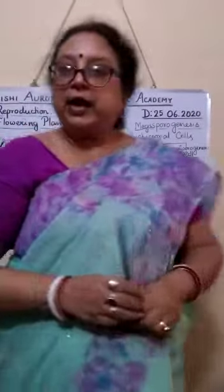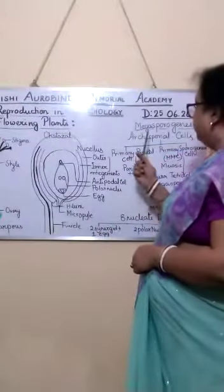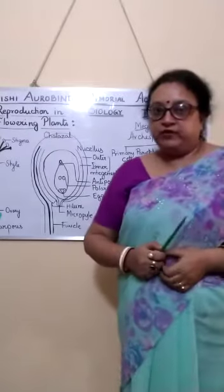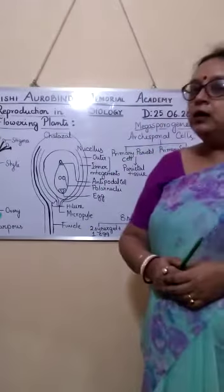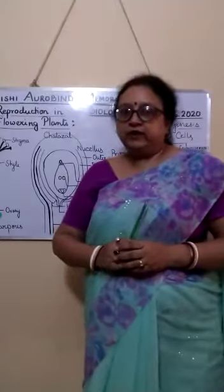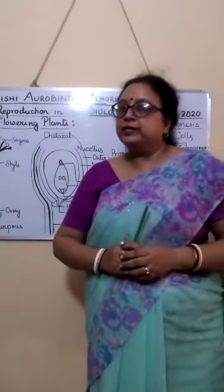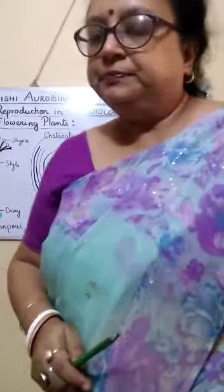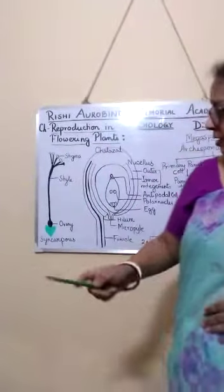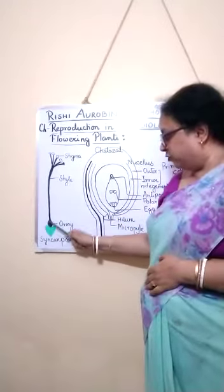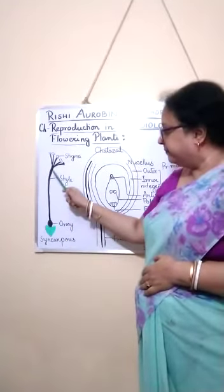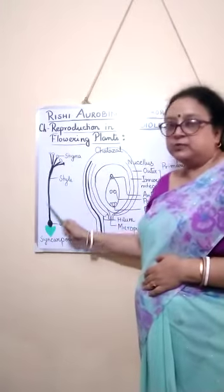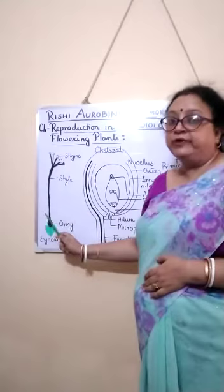We discuss about the megasporogenesis or the formation of the female gametophyte. The female reproductive organ of the flowering plant is known as a gynosium or pistil. These gynosium are made up of three parts: the ovary, the style, and the stigma. This is the gynosium of the pistil plant.